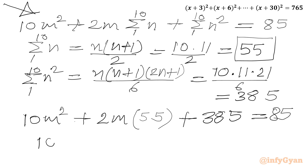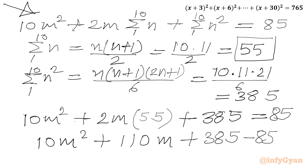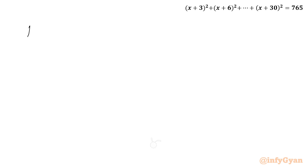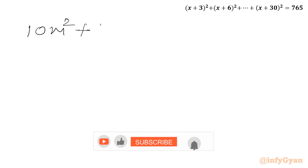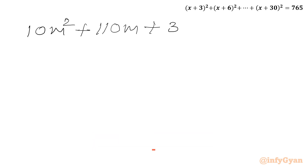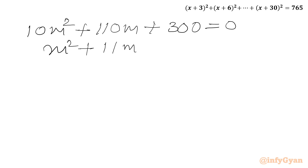Applying these values: 10m² + 2m × 55 + 385 = 85, which gives 10m² + 110m + 385 − 85 = 0, or 10m² + 110m + 300 = 0. The equation is divisible by 10, so we get m² + 11m + 30 = 0.